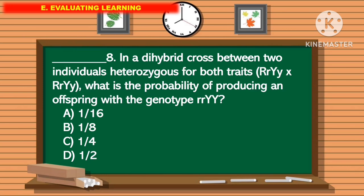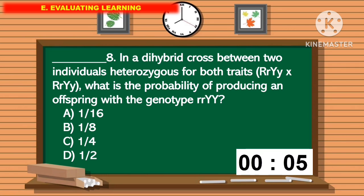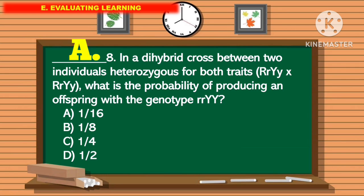For question number 8, in a dihybrid cross between two individuals heterozygous for both traits, what is the probability of producing an offspring with the genotype small r and capital Y? The correct answer is letter A.